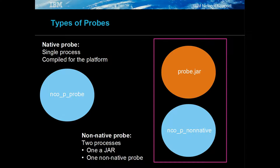There are two main types of probes: native and non-native. Native probes are built for a specific platform and run as a single process. Non-native probes run a specific non-native Java process and a platform-specific native process called the non-native probe.